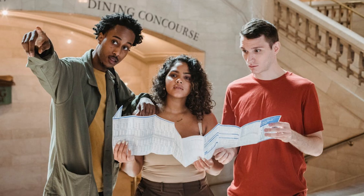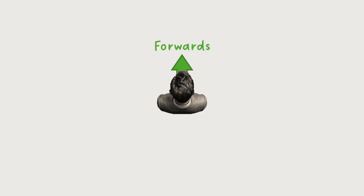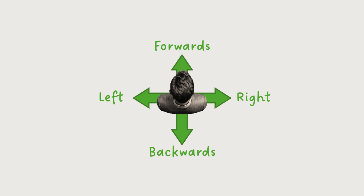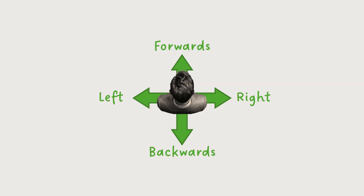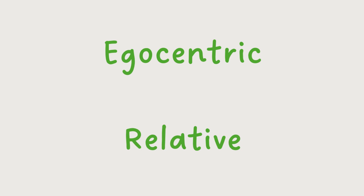If you wanted to give someone directions, how would you go about it? Personally, as an English speaker, I'd use the terms forwards, backwards, left and right to guide the listener from their own perspective. For instance, if I wanted them to take this route, I'd say something like turn left, then take the third right. This is the system almost all English speakers would probably use, and is what we call an egocentric or relative system.